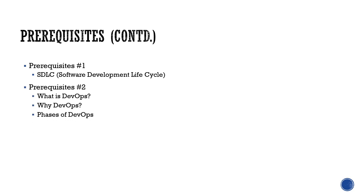The next prerequisite is you need to understand what exactly is DevOps, why do we need DevOps, and what is the use of DevOps. Then we'll talk about the phases of DevOps. I have divided this into two videos. This first video we are going to talk about the prerequisites - specifically SDLC - and in another video we are going to talk about what is DevOps, why DevOps, and the phases of DevOps.